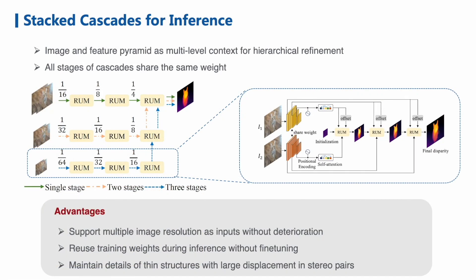During the inference phase, downsampling is necessary for high-resolution images to enlarge the receptive field, which may result in deterioration for features of small objects with large displacement. To solve this problem, we designed a stacked cascaded architecture for inference to take advantage of multi-level context. For a specific stage of the stacked cascades, denoted as rows in the figure, all the RUMs in that stage will be used followed by the last RUM in the next stage of higher resolution. All stages of the stacked cascades share the same weight during training, so no fine-tuning is needed.